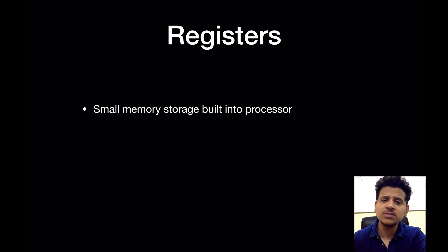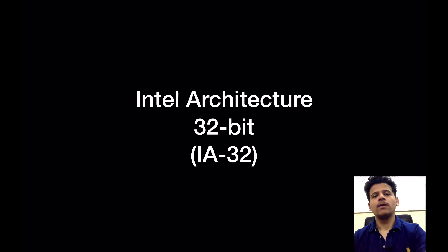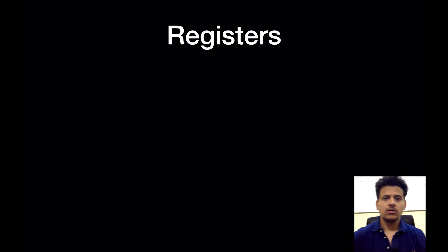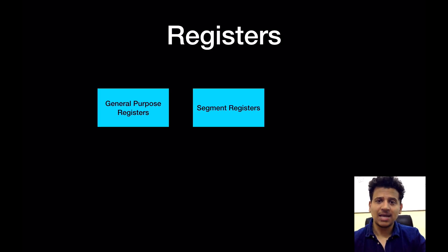Now we'll look at the registers. What is a register? Register is a small memory storage that is built into the processor. It is a volatile memory. So in the x86 32 system, registers are 32 bits, and in the 64 system, registers are 64 bits.